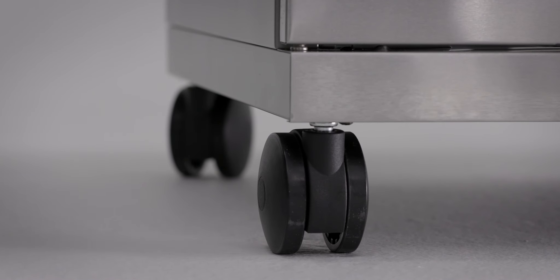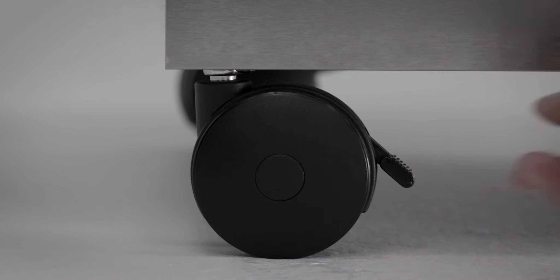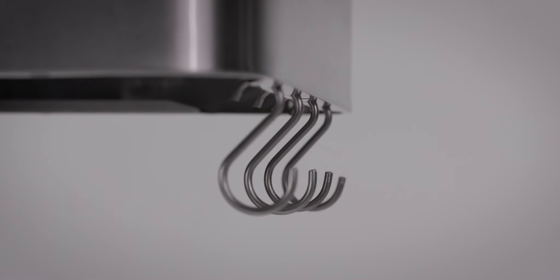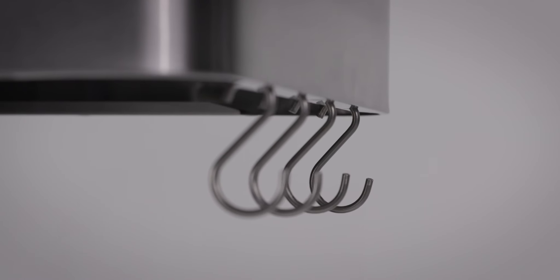Four locking nylon wheels allow you to easily move the grill and lock it into place securely. We've added storage hooks on the outside of each shelf to hold your cleaning brush on one side and cooking utensils on the other.